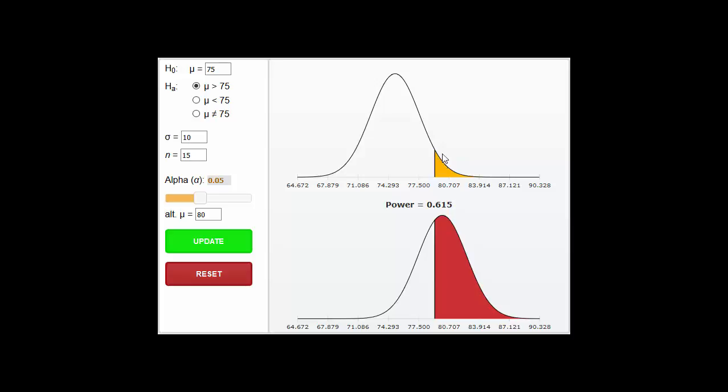Well, we're making the decision at that same point there, even when HA is true. So on the bottom here, we have not the alternative mu greater than 75. It says alt mu is equal to 80.